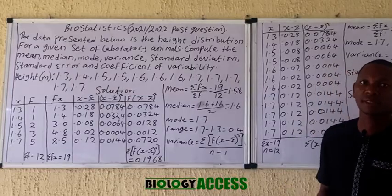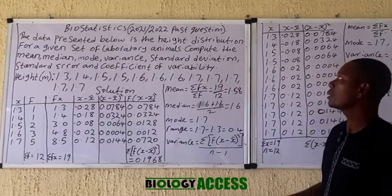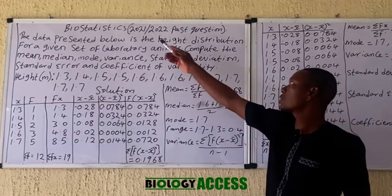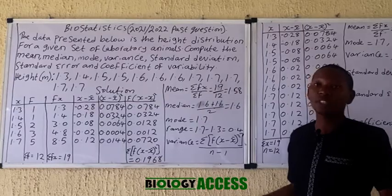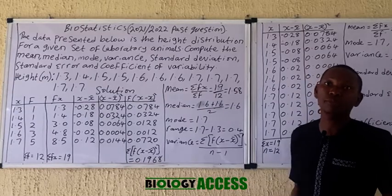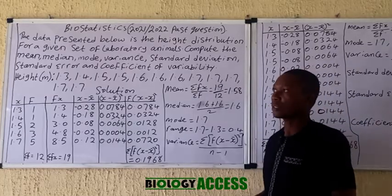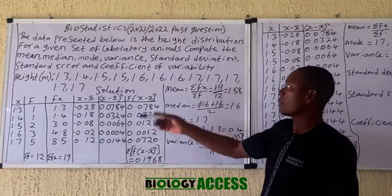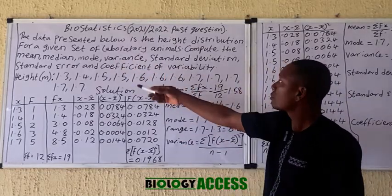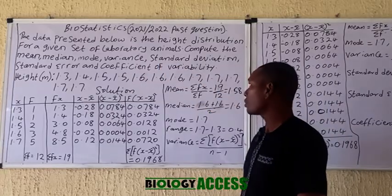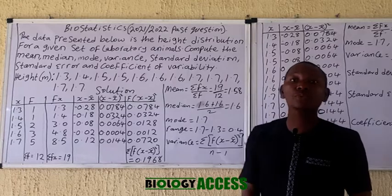Welcome to Biology Assets. In today's class we are taking a past question in biostatistics — specifically a 2021–22 past question. We are taking just one question before moving into other areas in biostatistics. The question is on the board and it's talking about the height of a set of animals in the laboratory, with the values given on the board.